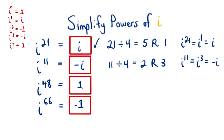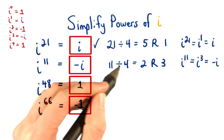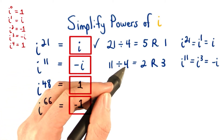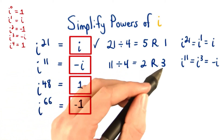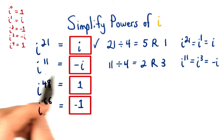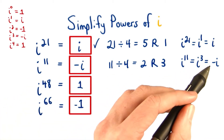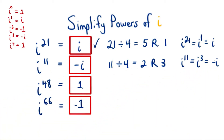For the second one, we'll take the power of 11 and divide it by 4, which is 2 remainder 3. So we know i to the 11th is equivalent to i to the 3rd, which equals negative i.